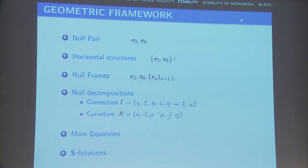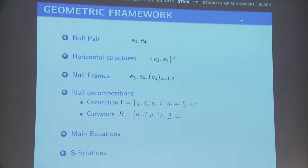Let me be more concrete about the geometric framework needed to understand this problem. In general relativity, or Lorentzian geometry more generally, the important directions are null directions because they correspond to null geodesics and most energy is transmitted along them. The decay of waves is very much dependent on behavior along null directions.